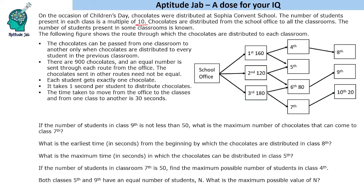The chocolates can be passed from one classroom to another only when chocolates are distributed to every student in the previous classroom. So first you finish distributing here and then pass the chocolates on. There are 900 chocolates and an equal number is sent through each route from the office, meaning 300 each. The chocolates sent in other routes need not be equal.